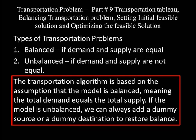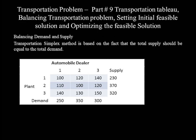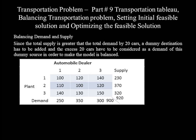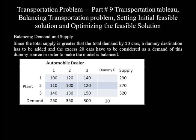As discussed in part 1, the transportation simplex method is based on the fact that total supply should equal total demand. Total demand is 250 plus 350 plus 300, which equals 900. Total supply is 230 plus 370 plus 320, which also equals 900. Since total supply equals total demand, no dummy destination is needed — the model is already balanced. A dummy destination would be an imaginary destination with zero transportation cost, added only to make demand and supply equal.